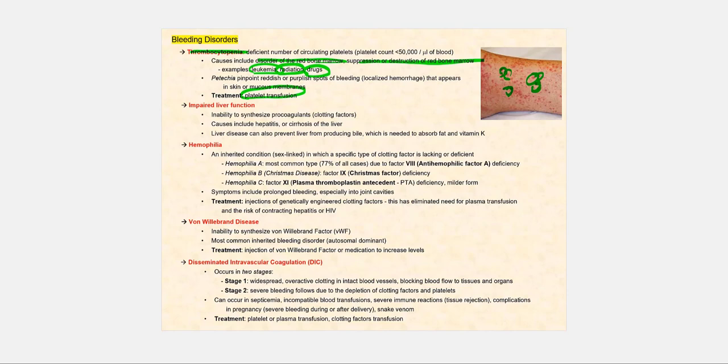The second major bleeding disorder involves our liver. We know that the liver synthesizes a number of plasma proteins, including coagulants or clotting factors. So if the liver is diseased or isn't working too well, in the case of hepatitis or cirrhosis of the liver, then the liver is unable to produce or synthesize these clotting factors or procoagulants. And without these clotting factors, then we will not be able to control blood loss, or we're just not going to form a blood clot.